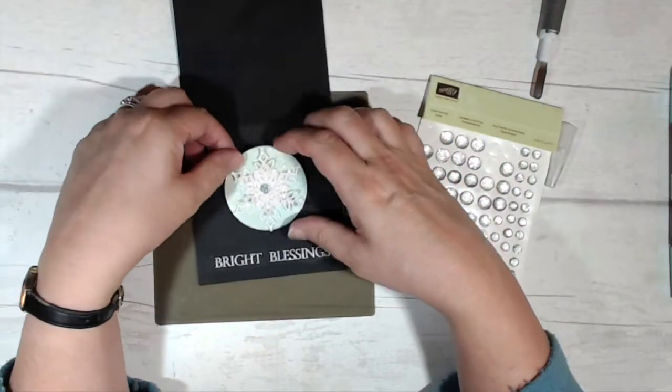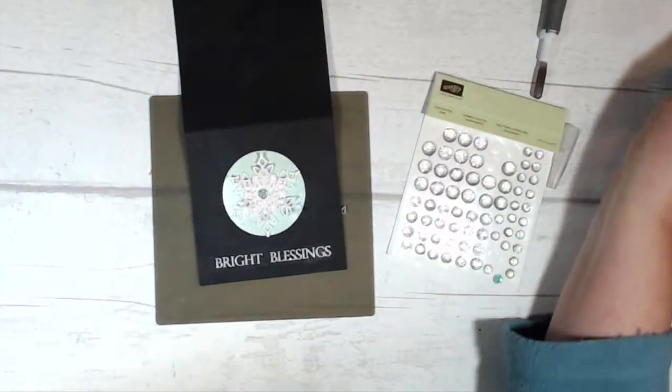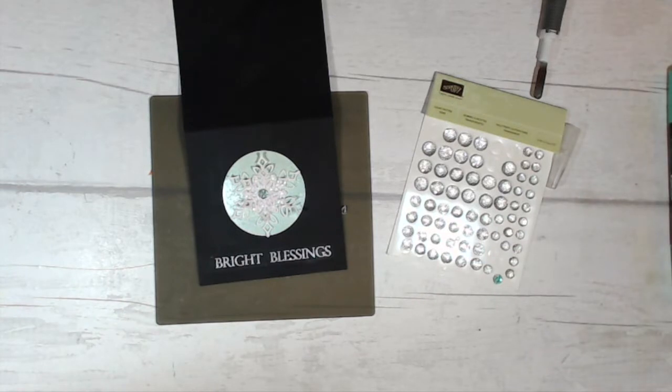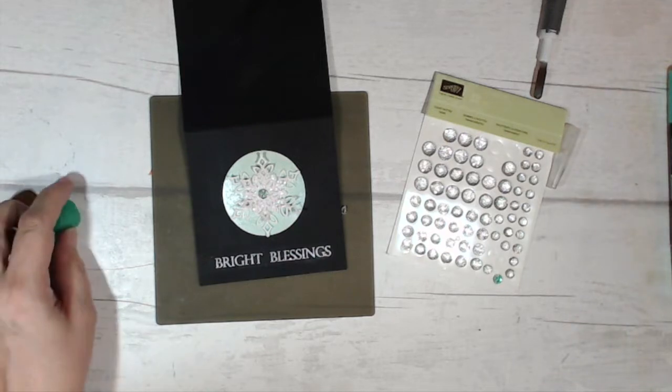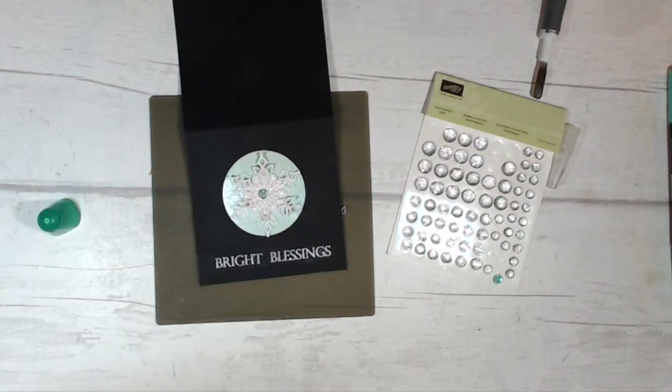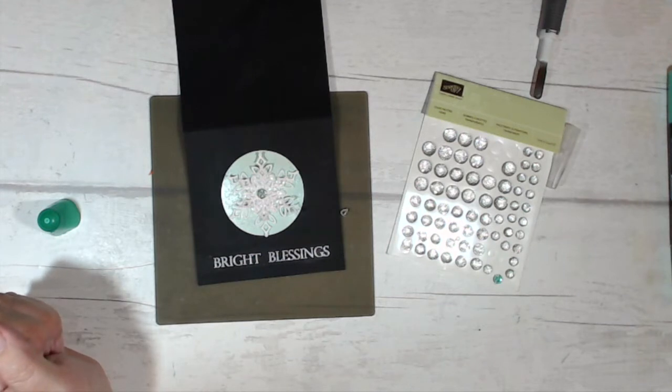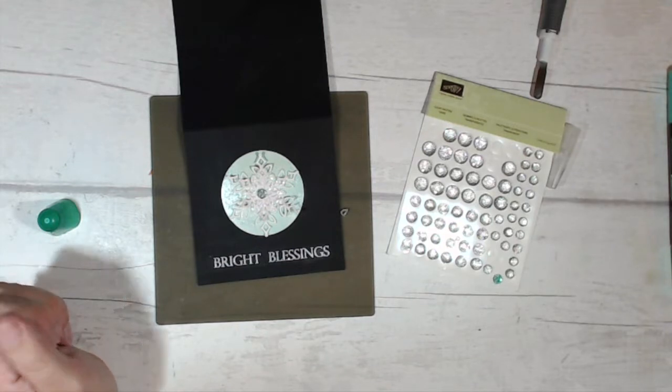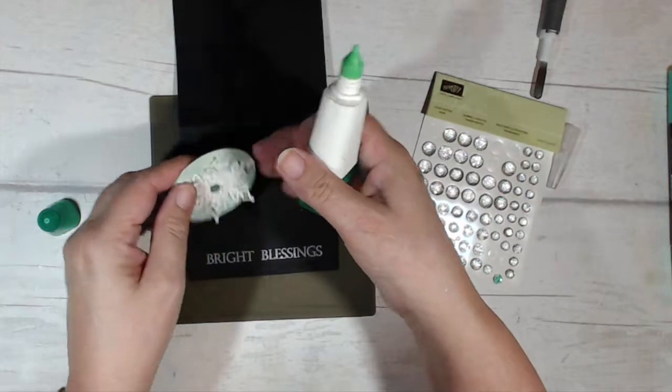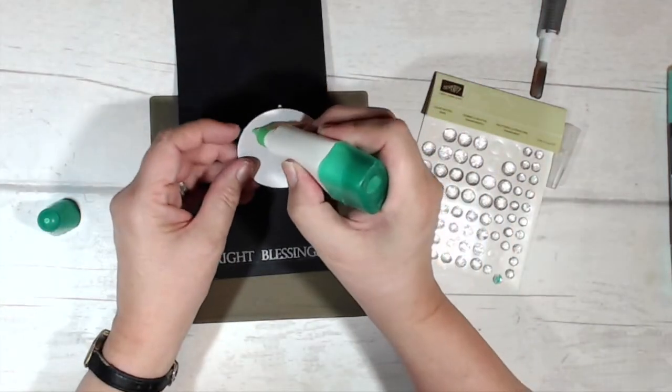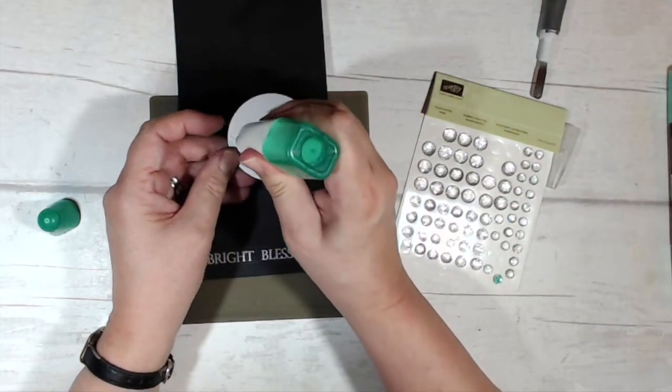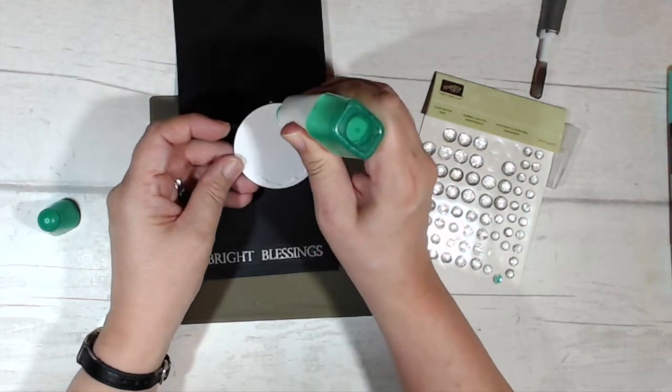That is my embellishment for my card. Let me bring back my card base and decide. I was thinking about popping it up on some dimensionals, but you know what, I think it's going to look better if it's flat. And would it look better again if I had another circle around it? Decisions, decisions. I'm just going to keep this simple.